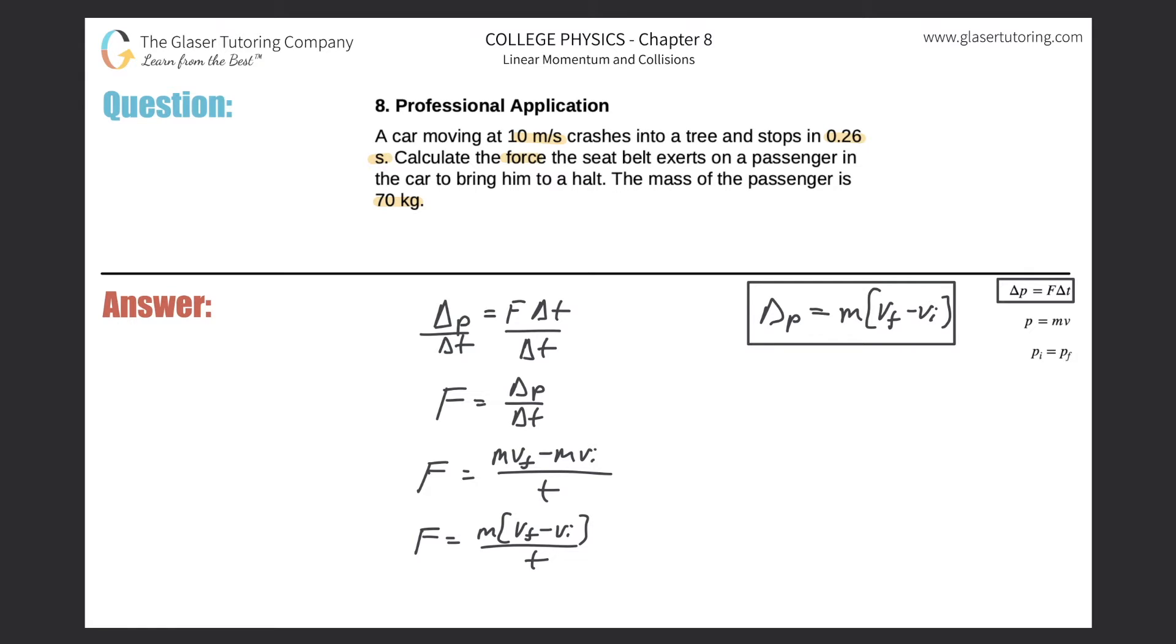Now let's simply plug in the values. So the mass of the passenger was 70 kilograms. The final velocity was zero - he crashed, boom, zero.